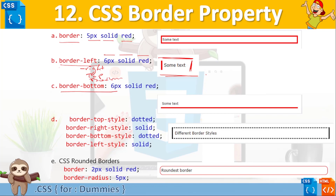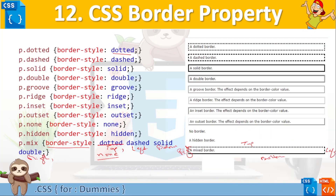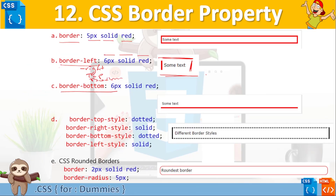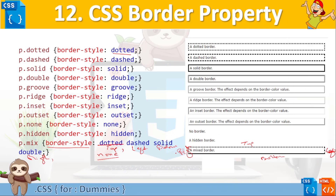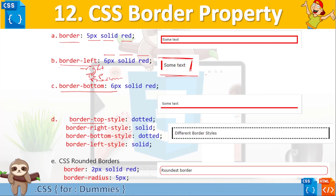You can also specify the style on each individual axis. Rather than using the shorthand — for example dotted, dashed, solid, double — you can write border-top-style for the top, border-right-style for the right, border-bottom-style for the bottom, and border-left-style for the left side. This gives you fine-grained control over the style of each side independently.